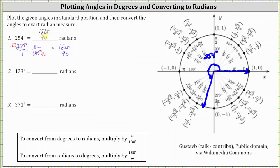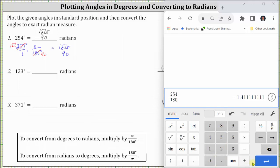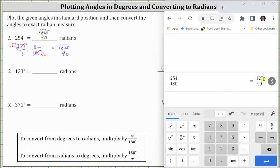I also want to show how we can check the fraction 127/90 using the Desmos scientific calculator. To do this, we leave off the pi and enter 254 divided by 180, then click the Convert to Fraction button on the far right. We can verify that 127 divided by 90 is the correct fraction part of the angle in radians. Be careful — this is not the full measure of the angle in radians because it does not include the pi. The exact measure in radians is 127π divided by 90 radians.